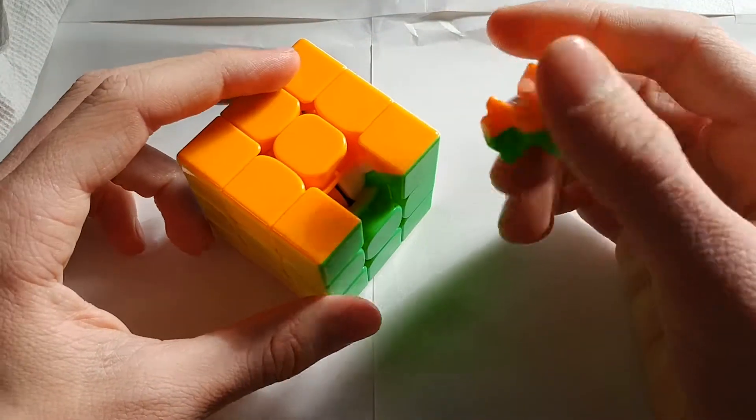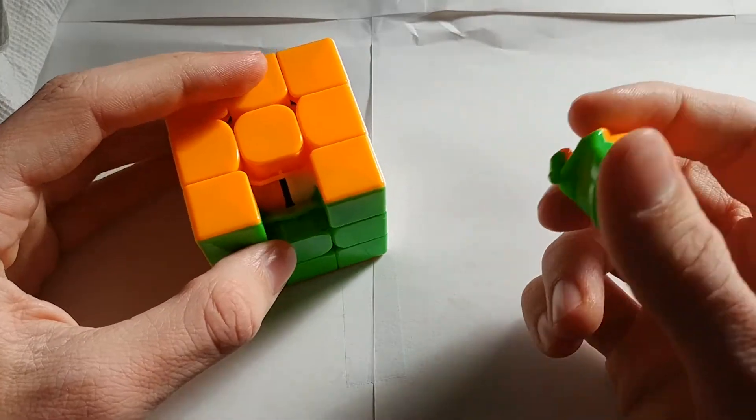So now we're going to close this side with an edge piece, because I find that sometimes corner pieces are hard to slip in.